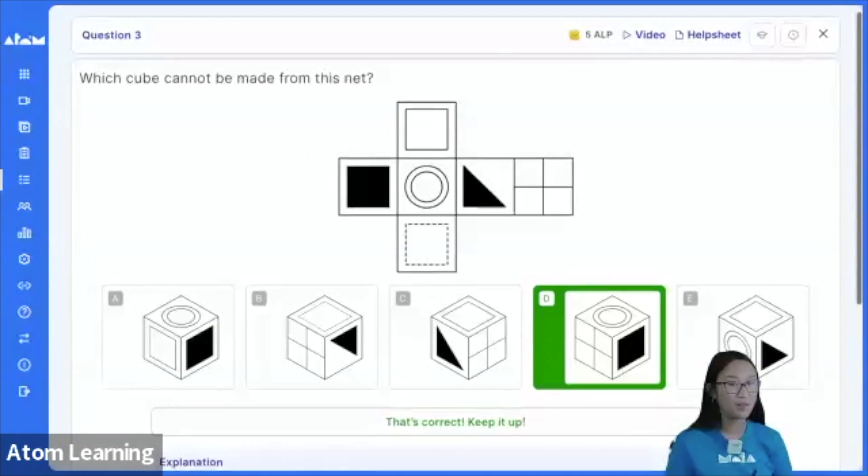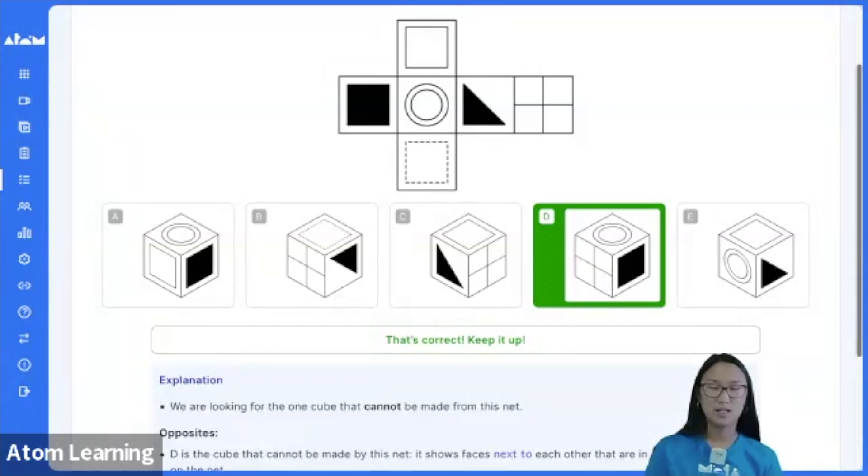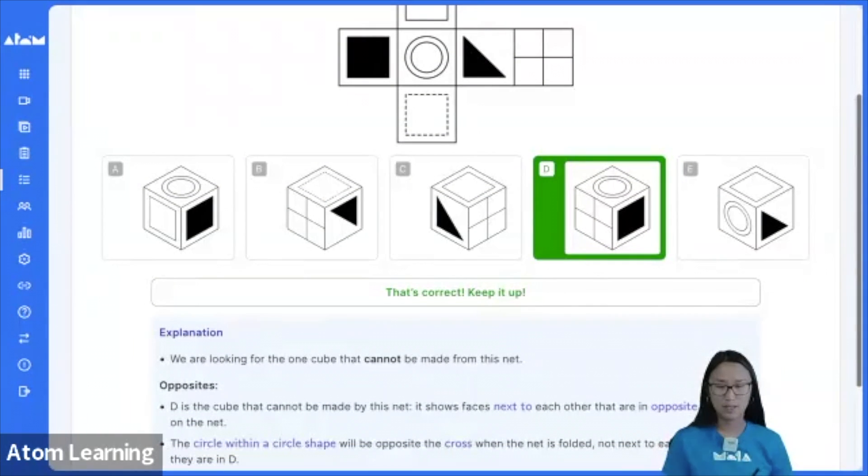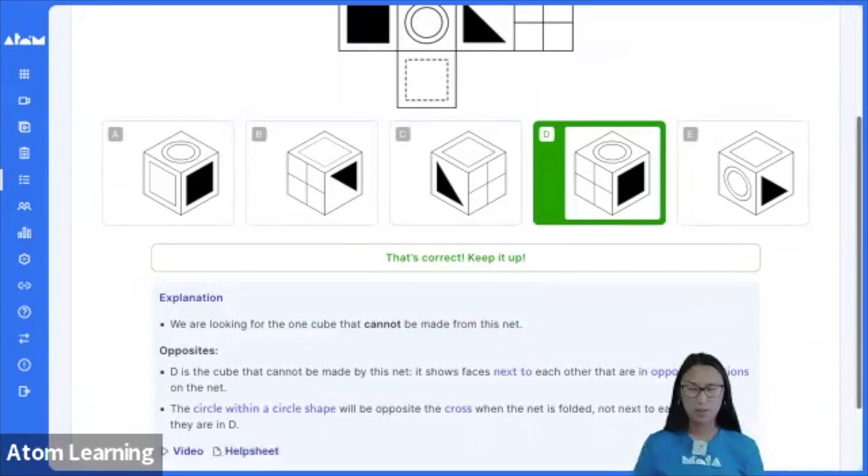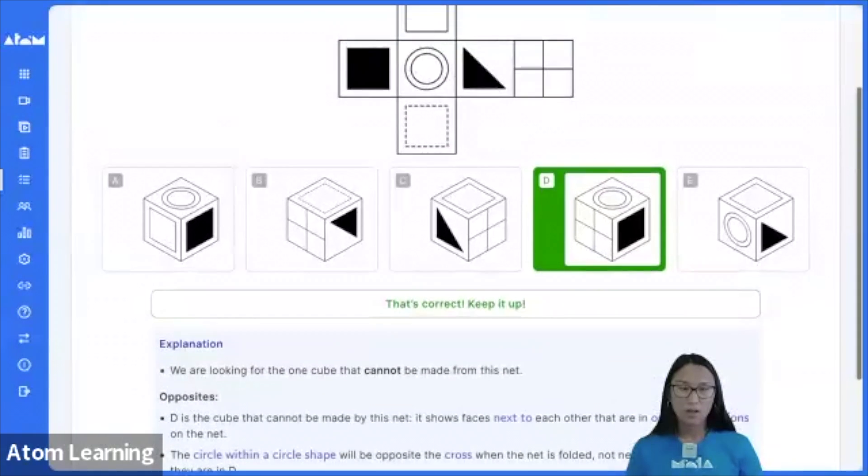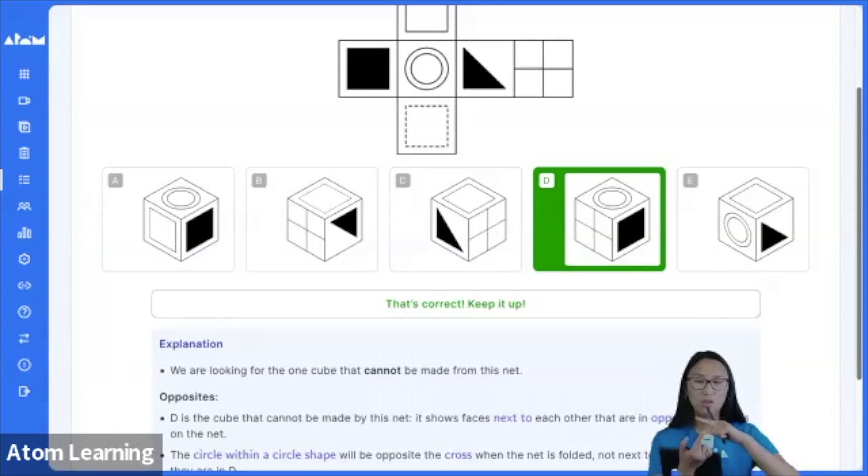Well done to those of you who went for D, because this is the one cube that cannot be made from this net. And the rule that is being violated is the opposites rule. So if we look at our net, the circle within a circle shape, which is in the sort of middle of the cross, should be opposite the cross when the net's folded up. So D is impossible because the circle within a circle and the cross should not be next to each other.